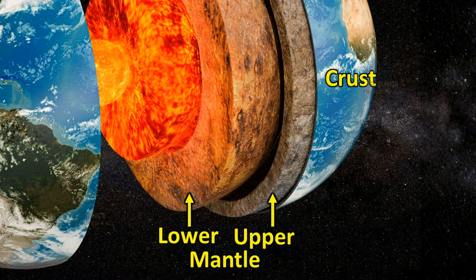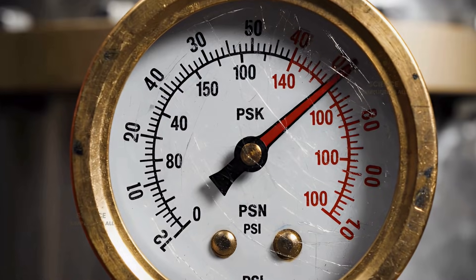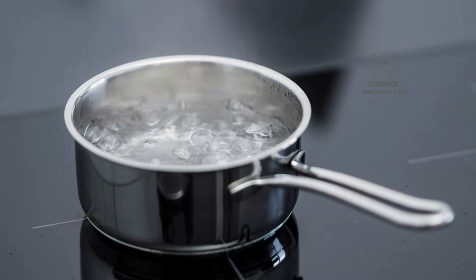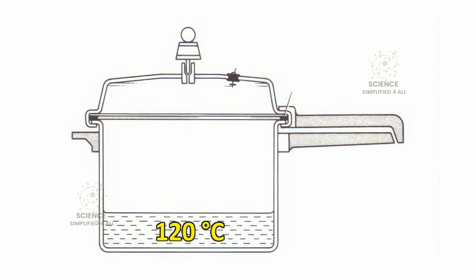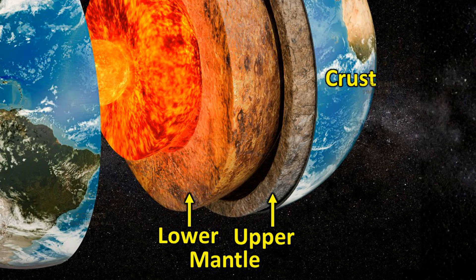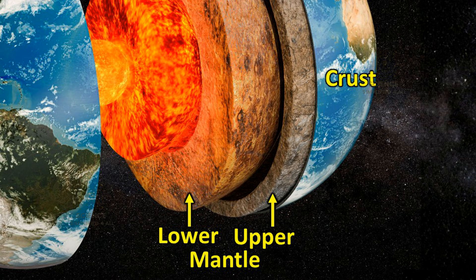The reason for this lies in pressure. When pressure increases, the melting point and boiling point of any material also increase. For example, water normally boils at 100 degrees Celsius. But inside a pressure cooker, water boils only at around 120 degrees Celsius because the high pressure raises its boiling point. In the same way, even though the temperature inside the mantle is higher than the normal melting point of rock, the enormous pressure caused by the weight of all the material above it keeps the rocks from melting. So not only the crust we stand on, but even the mantle beneath it remains almost completely solid.